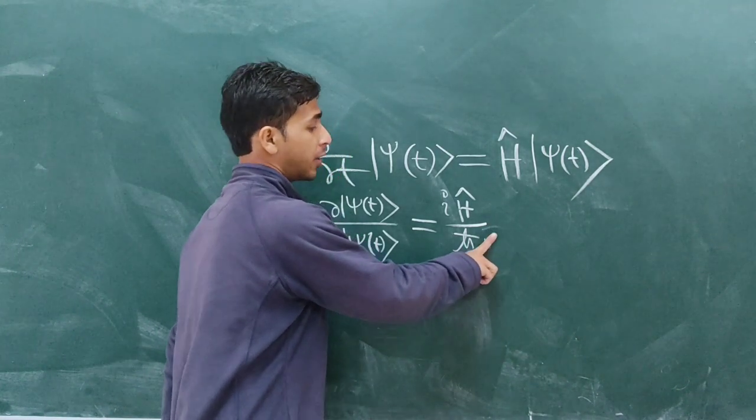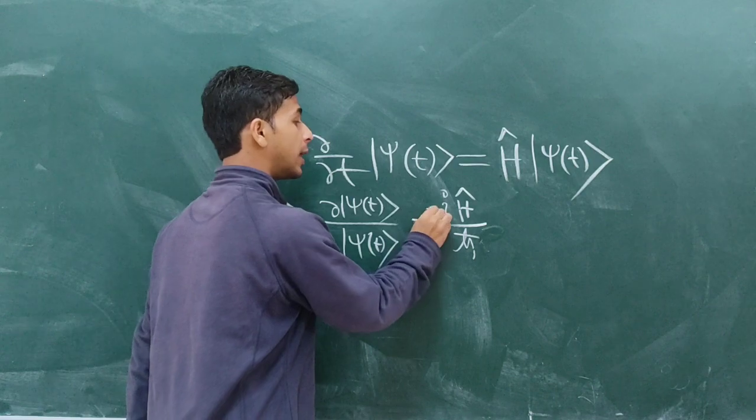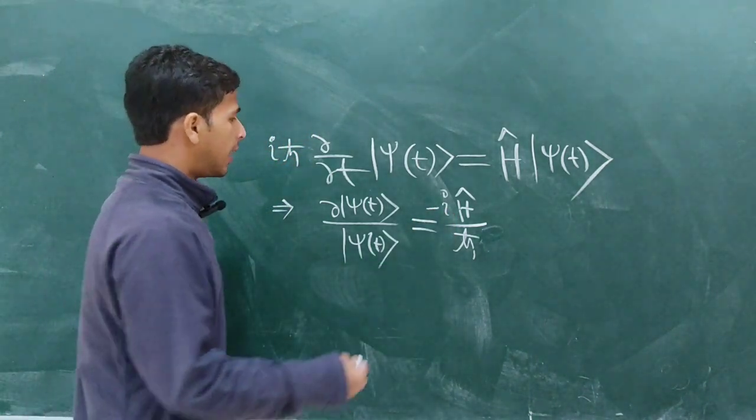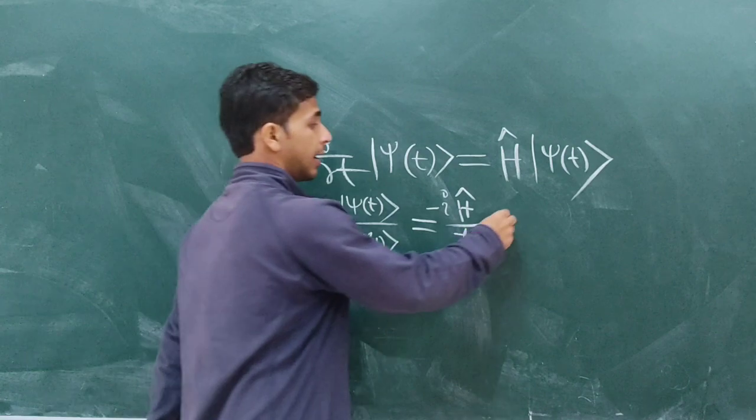So this i² will be get vanished and one negative sign will appear at this side, and we have dt here.